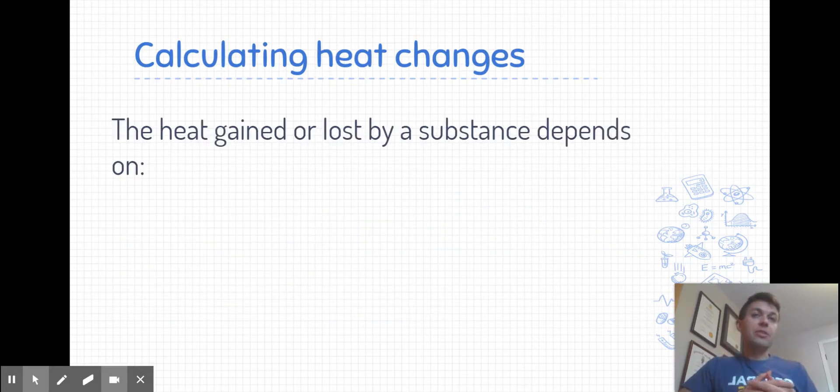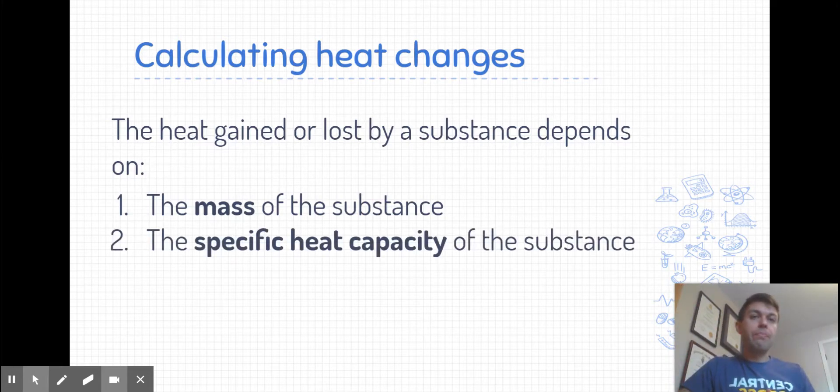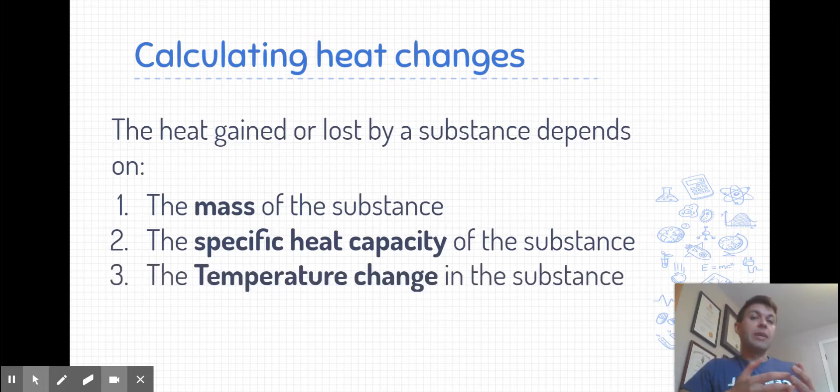There are three factors which go into determining the amount of heat gained or lost by a substance. The first is the mass of a substance. The higher the mass, the more heat that substance can hold. A tiny amount of water can only hold a small amount of heat, whereas a large amount of water can hold more heat. The second factor is the specific heat capacity of a substance, which we will define shortly. And finally, the temperature change that the substance undergoes as a result of the heat lost or gained.